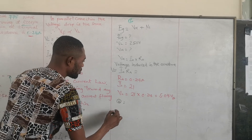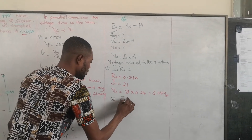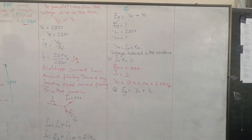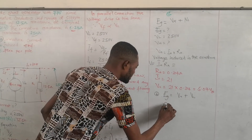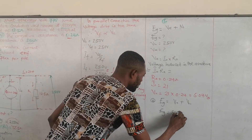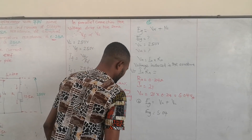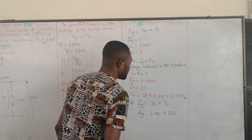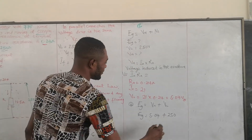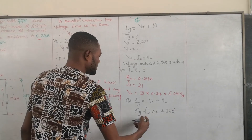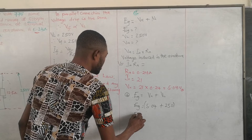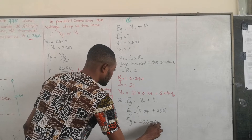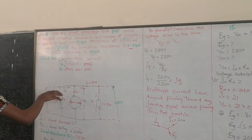Va equals 21 times 0.24, which equals 5.04 volts. The induced EMF formula gives Eg equals Va plus VL. Since there are no branch losses, Eg equals 5.04 plus 250, which gives an induced EMF of 255.04 volts. That is the voltage induced by this generator.